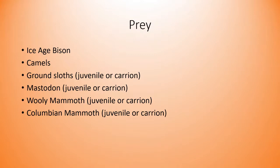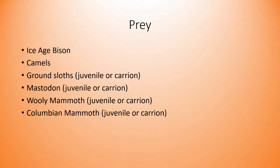The ice age bison were actually a bit larger than the average American bison. The American lion could also hunt camels — there were camels living in North America — as well as ground sloths, mostly targeting juveniles or feeding on carrion. For mastodons, woolly mammoths, and Columbian mammoths, it would target juveniles or feed on carrion, as healthy adults were too large and dangerous to attack. It was an opportunistic predator.